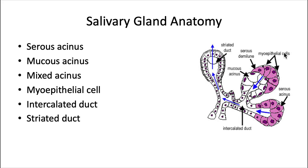The myoepithelial cells are thin cells at the edge of the tube that help squeeze out secretions. They're roughly equivalent to a smooth muscle cell. We also have ducts traveling through the salivary gland to eventually open up into the oral cavity. The intercalated ducts have a smaller lumen, while the striated duct is an intersection of a bunch of intercalated ducts and so has a larger lumen.